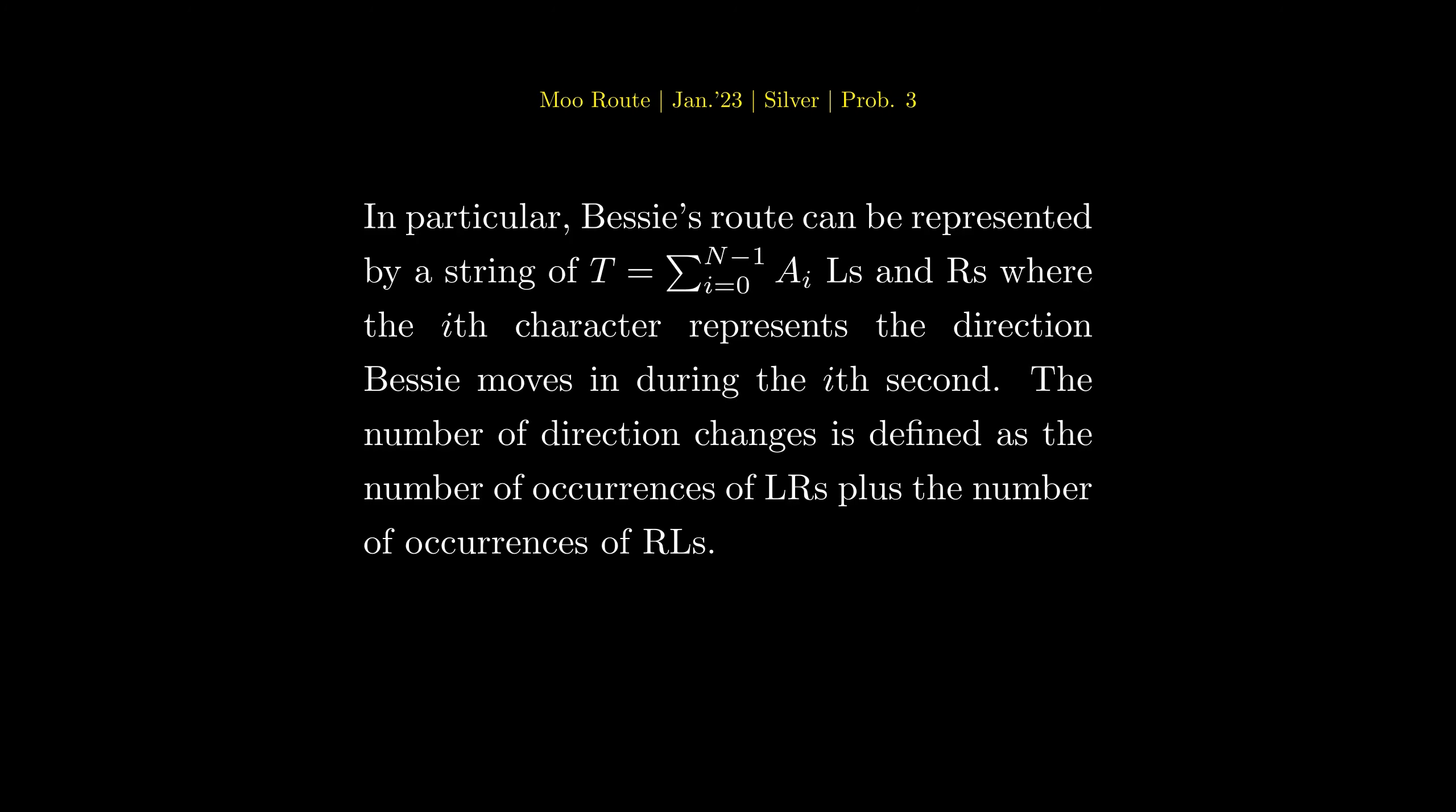In particular, Bessie's route can be represented by a string of Ls and Rs, where the i-th character represents the direction Bessie moves in during the i-th second. The number of direction changes is defined as the number of occurrences of LR plus the number of occurrences of RL.